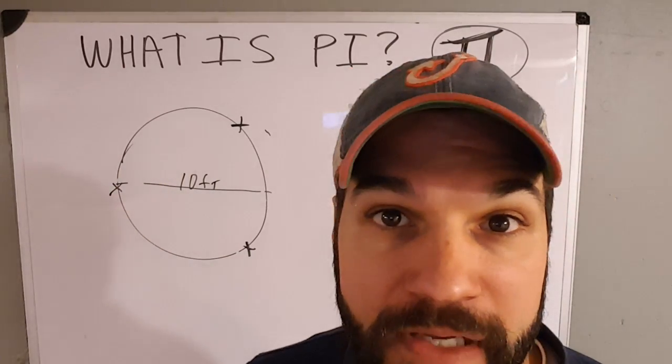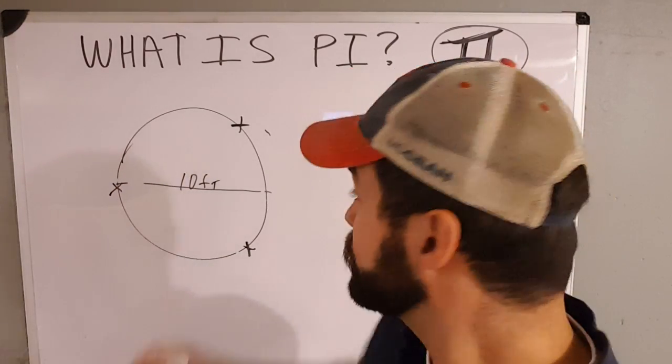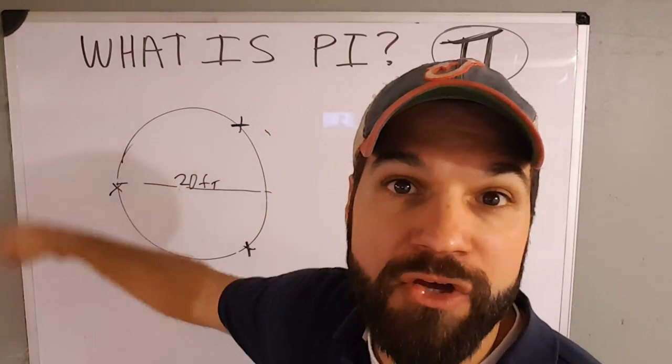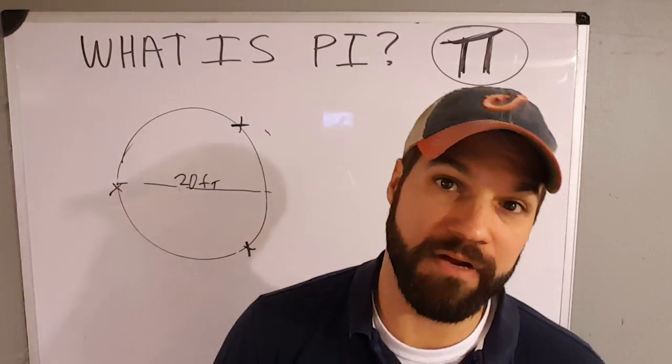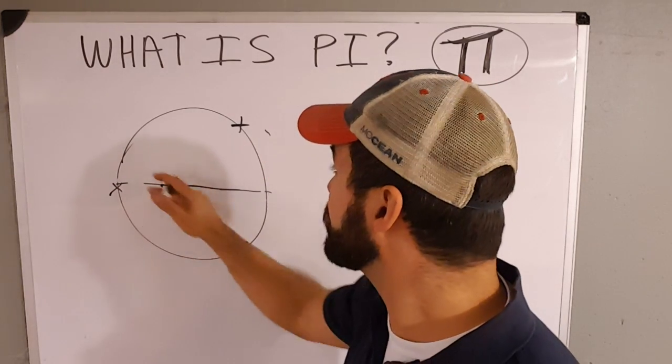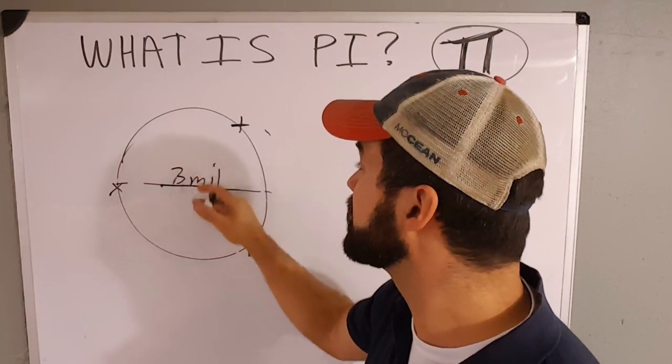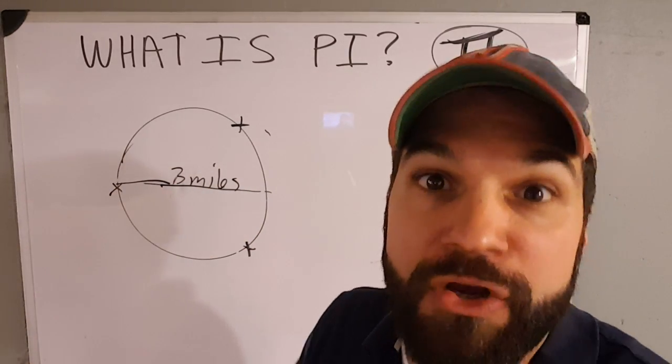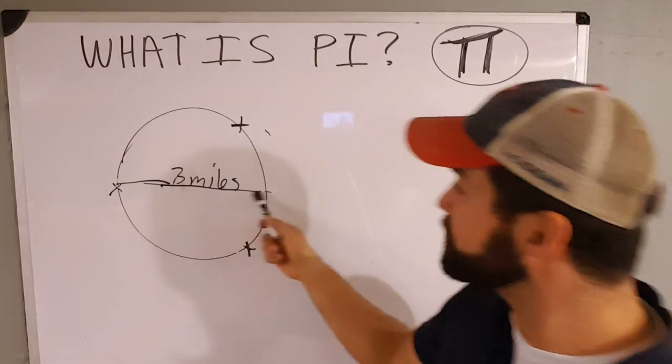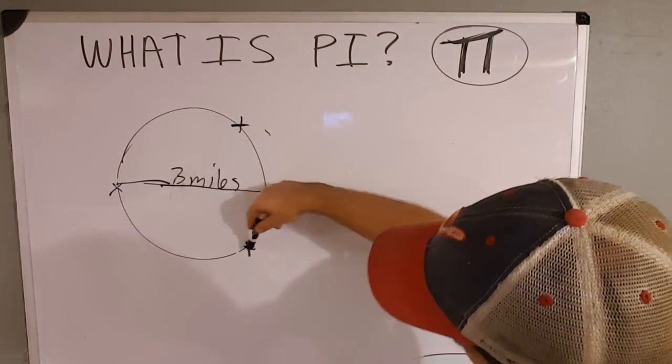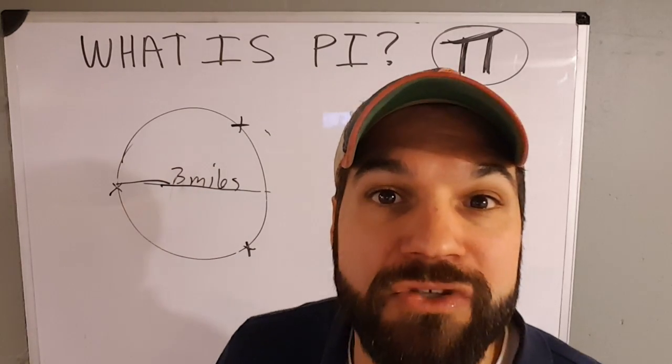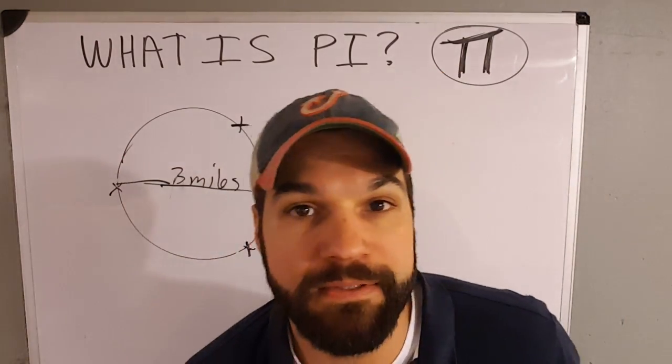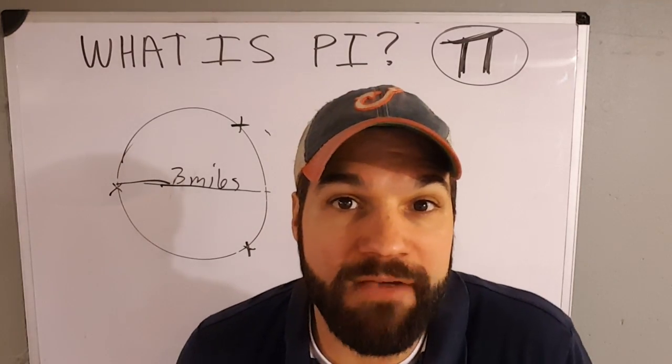10, 20, 30 feet. And what if it was 20 feet across? What would the distance around be? The distance around would be 20, 40, 60 feet around. And what if the distance across was three miles? How far would the circle be? Like you have a crop circle out in your cornfield. Well, if it's three miles across, then it's going to be three, six, nine miles all the way around because about three of these things wrap around. Okay. That's pretty cool.